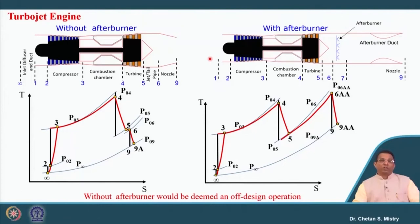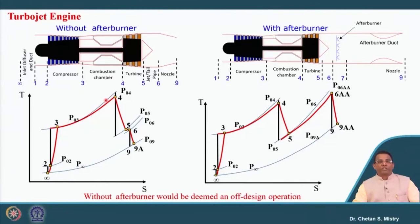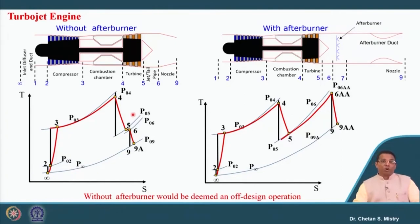Now let us try to understand which engines we were discussing. First, we started with the turbojet engine in two configurations: without afterburner and with afterburner. Let us analyze this cycle on the T-S diagram. Process 2 to 3 represents compression, 3 to 4 represents heat input, 4 to 5 represents expansion, and 6 to 9A represents expansion inside the nozzle. When we configured this engine, we solved numericals for the ground condition. Let us analyze why we look at ground condition analysis.